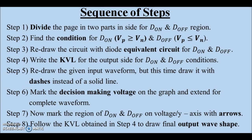Let us revise the sequence of steps. First, divide the page, then find the condition, then redraw the circuits, then write the respective KVLs, then redraw the input waveform, then mark the decision making voltage on the graph. Then, with reference to decision making voltage, mark dOn and dOff regions on the graph. And finally, draw the output wave shape based on the KVLs of step 4 with solid line.